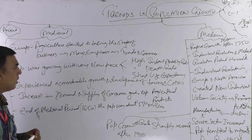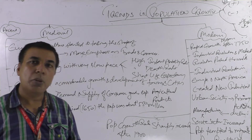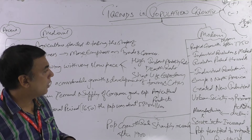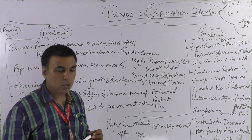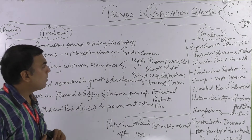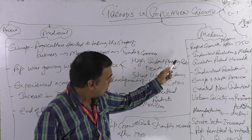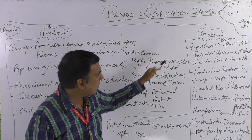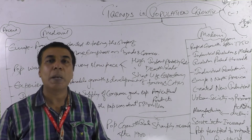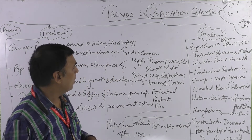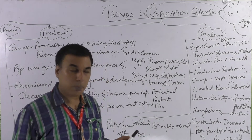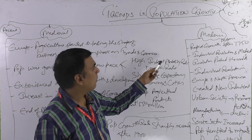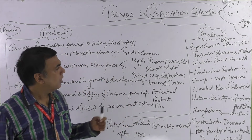The population was growing at a very slow pace at that time. Why? Because of the high infant mortality rate, high death rate, and short life expectancy. Infant mortality means the death of newborn babies. At that time, medical assistance was not developed, so epidemics were spreading. Because of these things — high infant mortality, high death rate, short life expectancy — the population grew slowly. The food was not adequate and medical relief was not adequate.